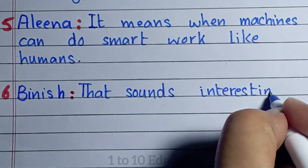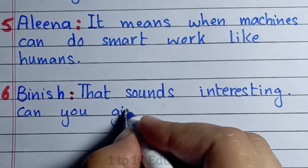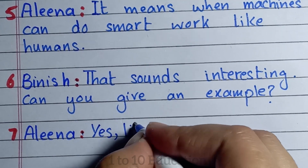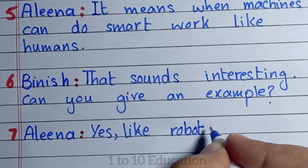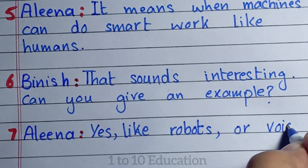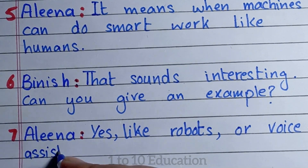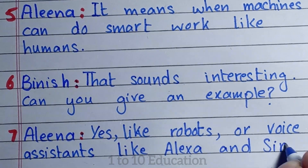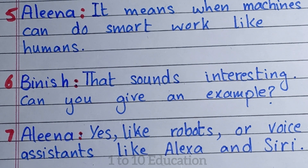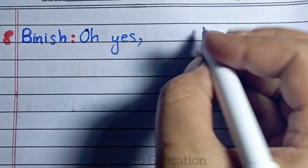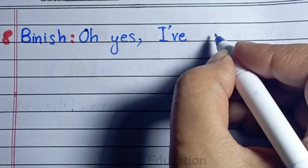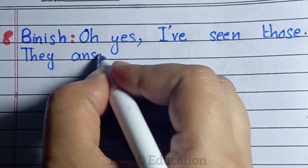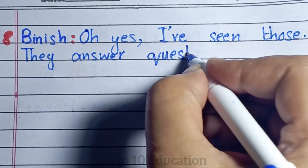Number 6. Banish: That sounds interesting. Can you give an example? Number 7. Alina: Yes, like robots or voice assistants like Alexa and Siri. Number 8. Banish: Oh yes, I've seen those. They answer questions.